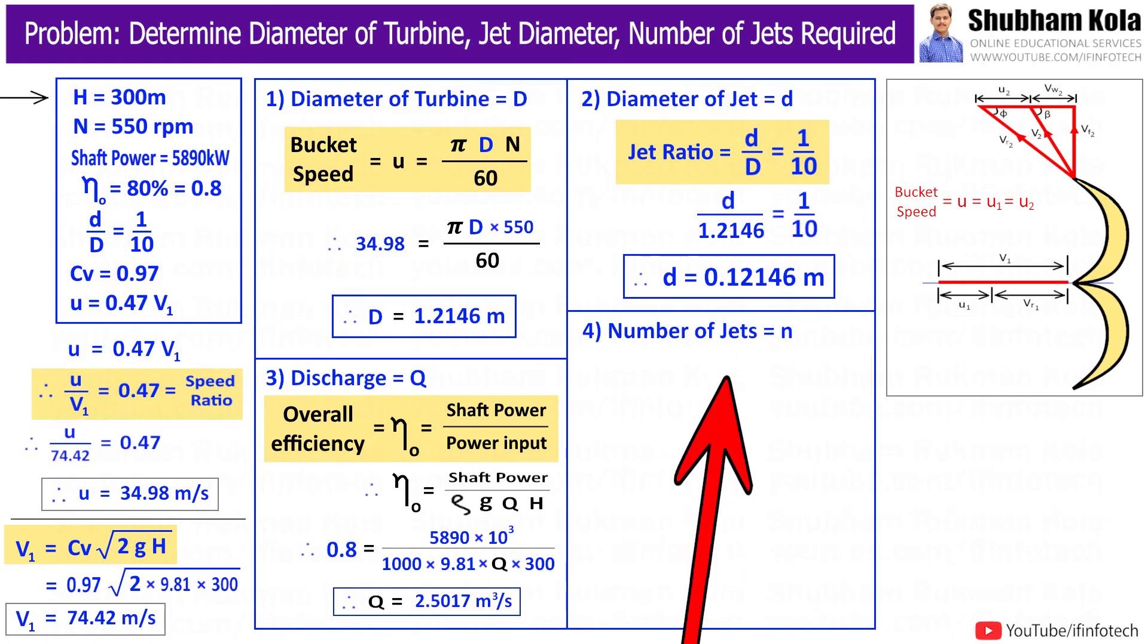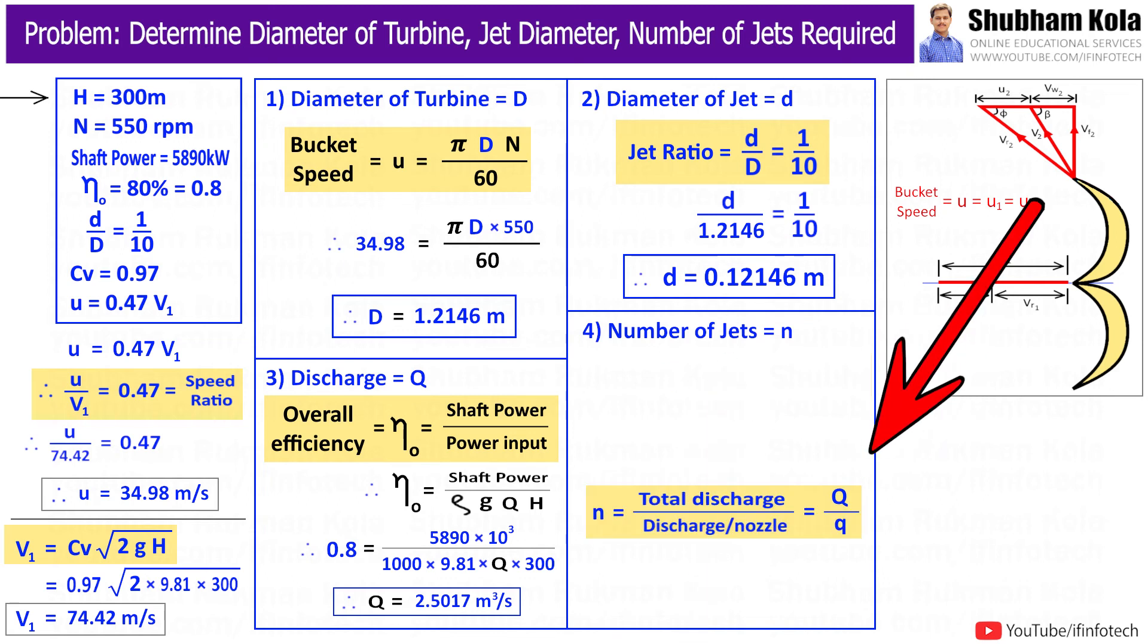The next term we need to calculate will be number of jets required, that is small n. The formula is n equals total discharge Q, which we have calculated earlier, divided by discharge per nozzle, that is small q.